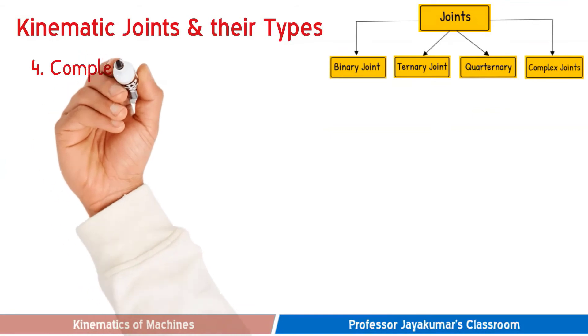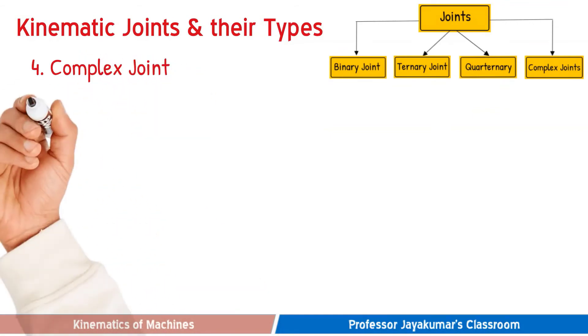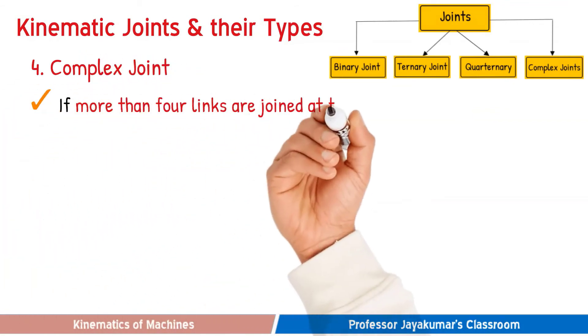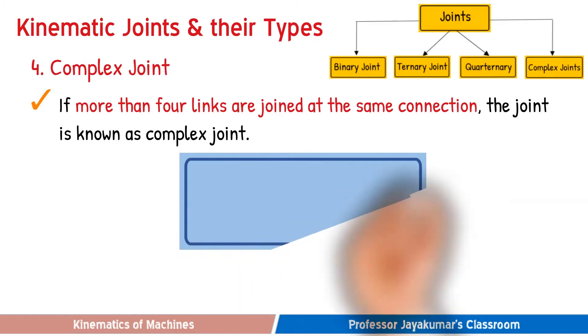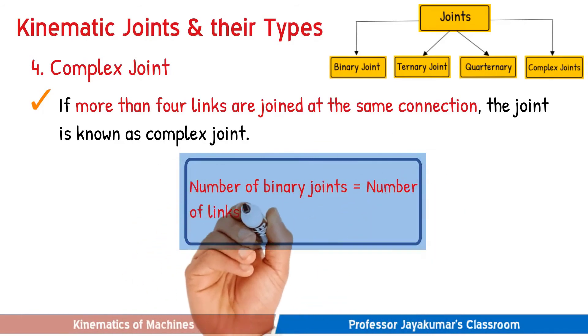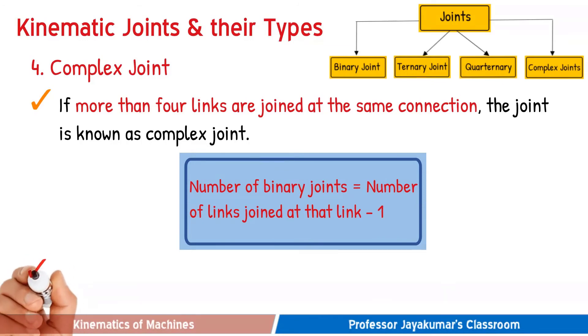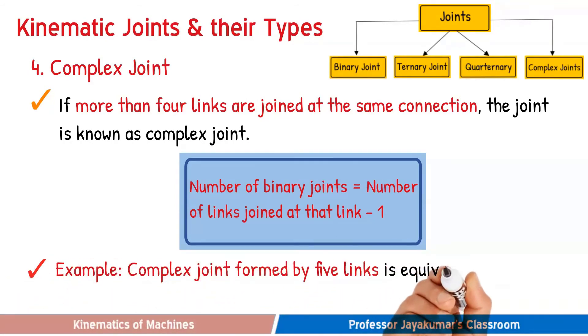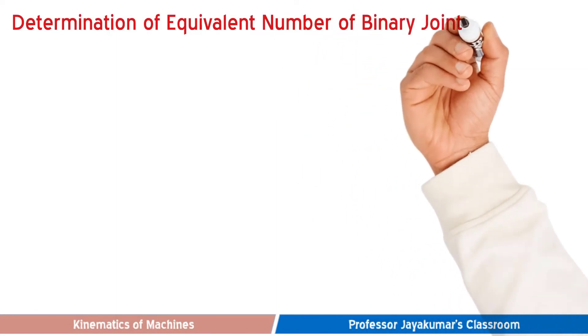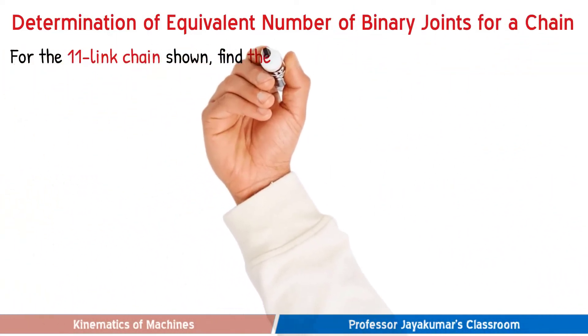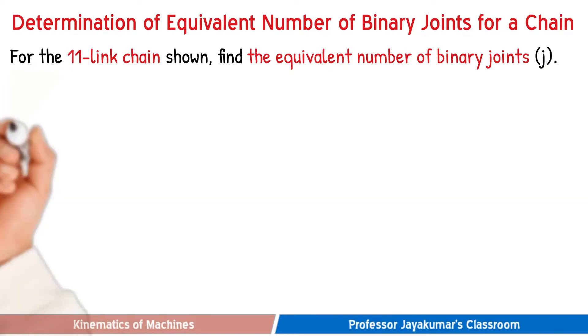The final type is a complex joint. If more than four links are joined at the same connection, then the joint is known as complex joint. Number of binary joints is one less than number of links joined at that pin joint. So for a five joint, it is equivalent to four binary joints. Often it is required to determine the equivalent number of binary joints for a given chain while solving numerical problems.